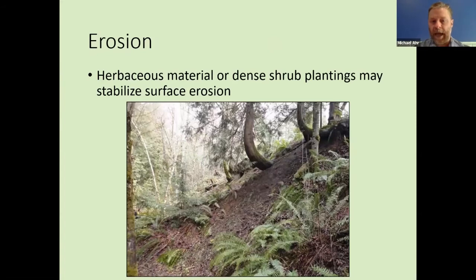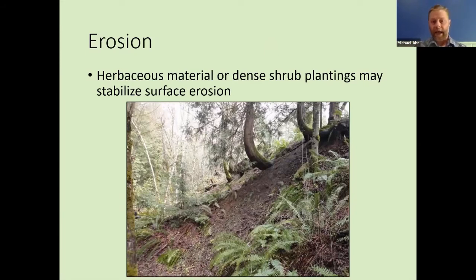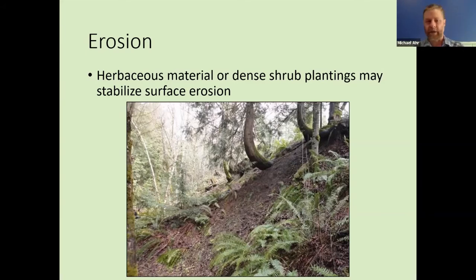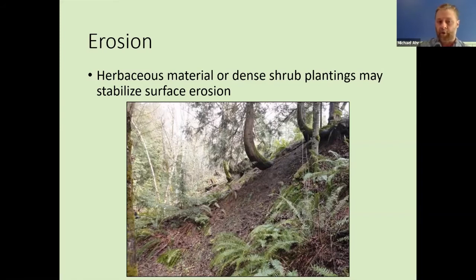A lot of times in our forests, we have unstable slopes that are thankfully held together by trees and shrubs. Sometimes the trees and shrubs are doing the job, but herbaceous material can really help with surface erosion. In this photo, this was an area where a little landslide occurred — especially in the West Hills outside of Portland, these little landslides can happen. It can be great to come in with some grass seed or shade-tolerant shrubs that you can plant into these sites because those will help reduce further erosion.